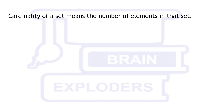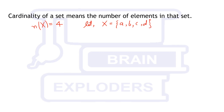Cardinality of a set means the number of elements in that set. X has cardinality 4, so we can write n(X) = 4, meaning X has 4 elements. For further work, we will assume that X = {a, b, c, d}, a set of 4 elements.